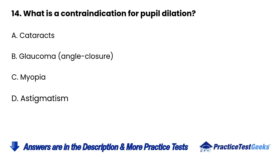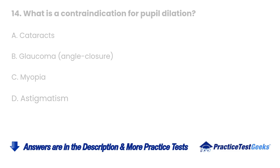14. What is a contraindication for pupil dilation? A. Cataracts B. Glaucoma angle closure C. Myopia D. Astigmatism